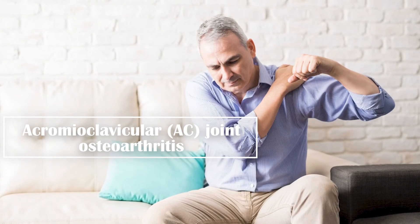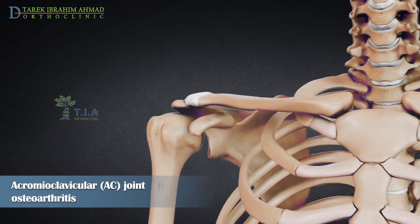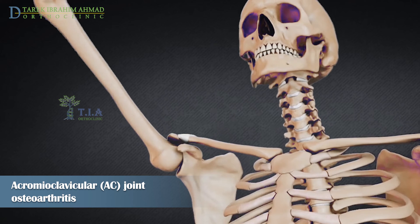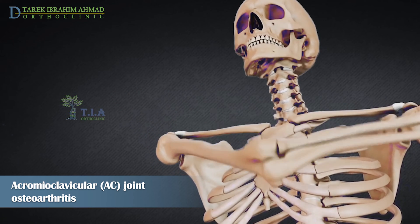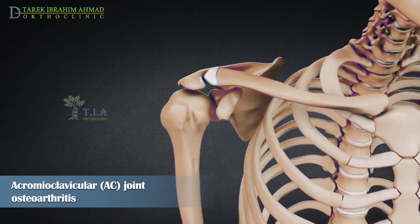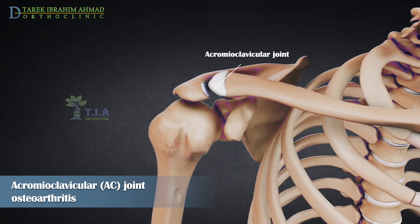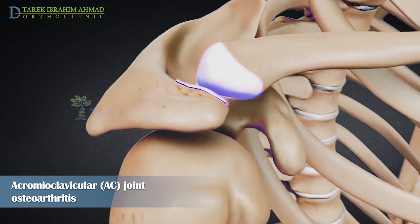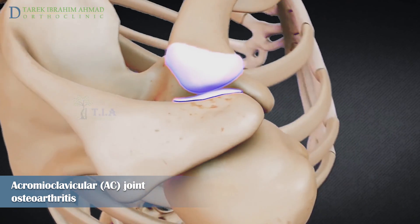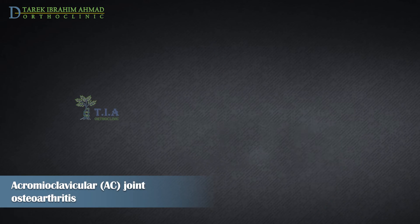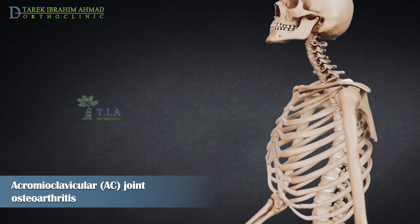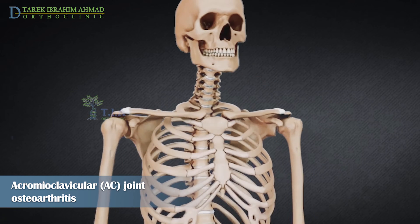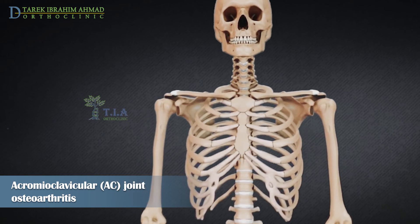Acromioclavicular (AC) joint osteoarthritis includes degenerative changes in the articular cartilage and other structures in the AC joint, resulting in pain, stiffness, and weakness in the shoulder. The acromioclavicular joint is the point where the distal end of the clavicle meets the acromion. In a healthy joint, the collarbone end and the articular facet of the acromion are covered with slippery cartilage, which plays an important role in shoulder movements such as elevating the arm over the head.